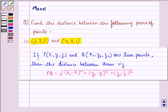Before starting with the solution, let us see the key idea behind the question. That is, if the point P, that is (x1, y1, z1) and the point Q, (x2, y2, z2) are two points, then the distance between them PQ is given by square root of (x2 minus x1) the whole square plus (y2 minus y1) the whole square plus (z2 minus z1) the whole square.